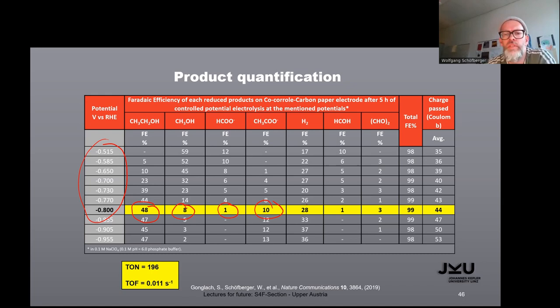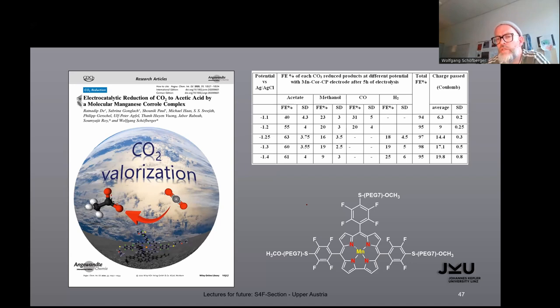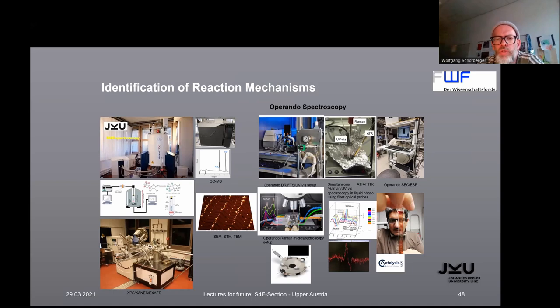Here you see the different amounts of compounds developed in this solution. In the gas phase we could quantify approximately 30% for hydrogen and other compounds. This was the story which we published there. Then we did another study where we changed from cobalt to manganese. This complex produces at -1.5 versus silver-silver chloride 61% acetate, roughly 10% methanol, and in the gas phase CO and hydrogen. We published this in Angewandte Chemie last year with a cover image.